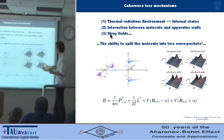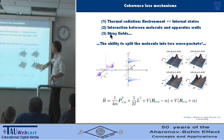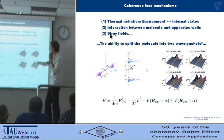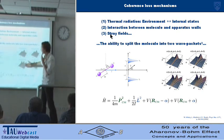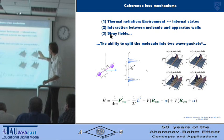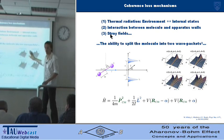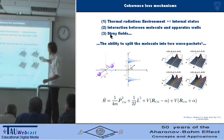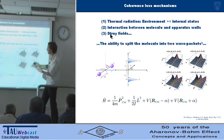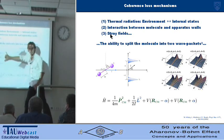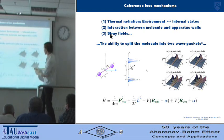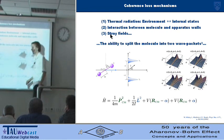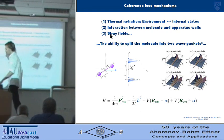On the right is where they don't include the internal degrees of freedom in their model, and on the left is where they do. And you can see that the contrast is reduced from right to left. Top to bottom is just different separations of the slits—quite widely separated slits give you more fringes.